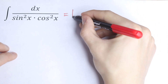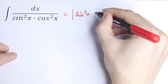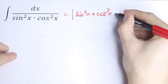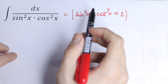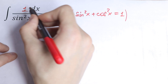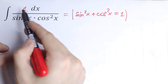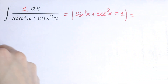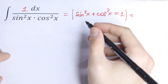We all know the main trigonometric equation: sine squared x plus cosine squared x equals 1. So if we write this equation instead of this 1 right here, we can simplify this easily and without any problem.